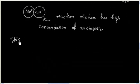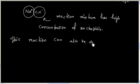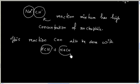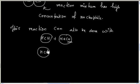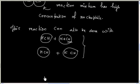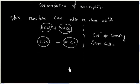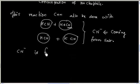This reaction can also be done with HCN and NaCN, or HCN plus KCN — the salt of cyanide ion. In these cases, free CN⁻ comes from the salt and acts as the nucleophile.